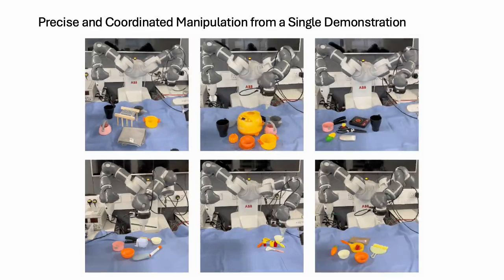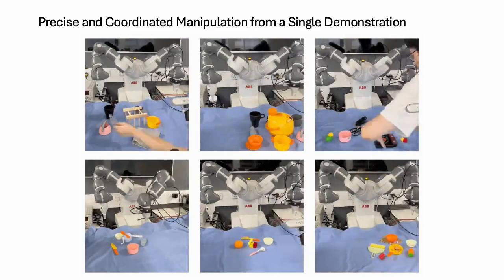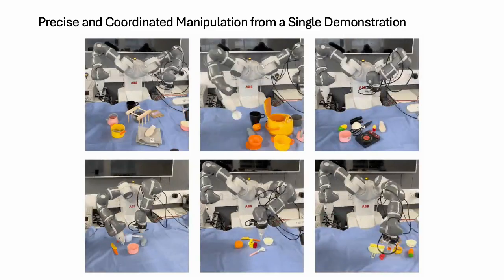In this work, we present a new method for dual-arm robots to learn precise and coordinated manipulation tasks using a single human demonstration.